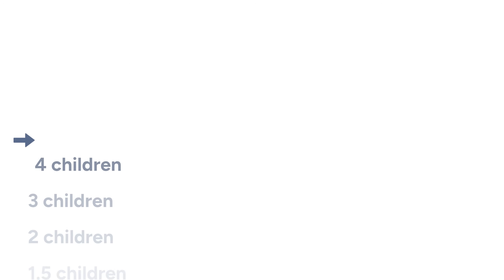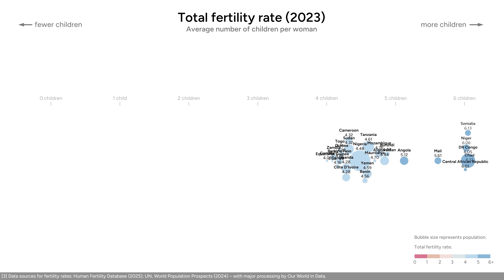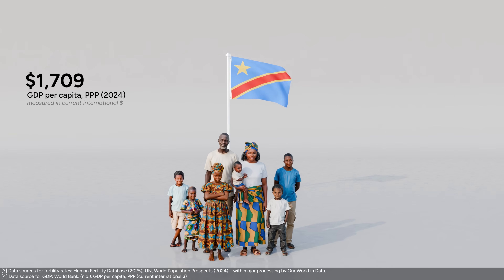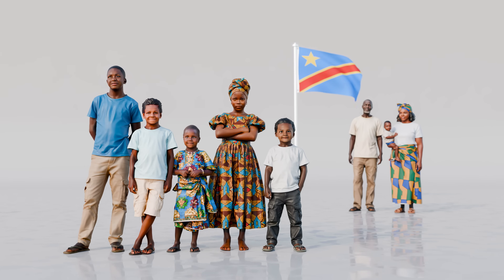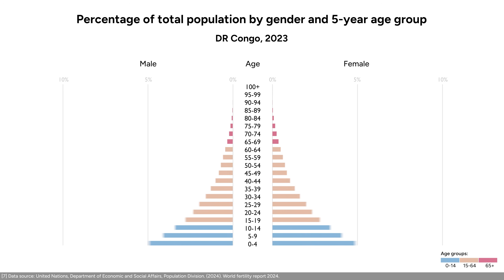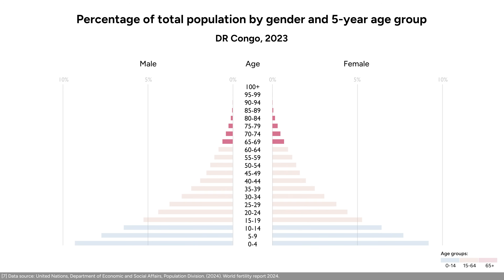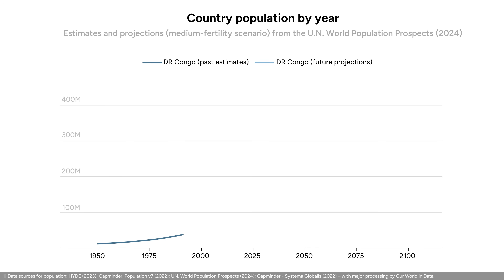Let's start with countries with high fertility rates. There are 26 countries with a total fertility rate above 4 and most of them are in Africa. The more to the right the bubbles are, the higher the fertility rate. Let's look at the Democratic Republic of the Congo. The DR Congo is one of the poorest countries in the world with a GDP per capita of about 1,700 dollars and a fertility rate of 6 children per woman. Because of this high fertility rate, the DR Congo has one of the youngest populations in the world. Their age pyramid is wide at the bottom with a lot of children and narrow at the top with few elderly people. Their median age is 15.8 years — half of the country hasn't turned 16 yet.